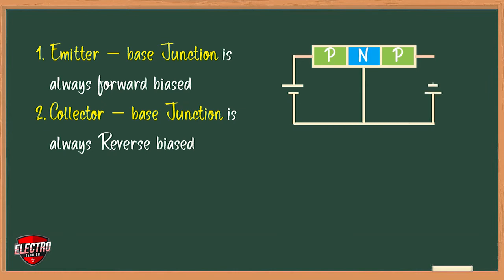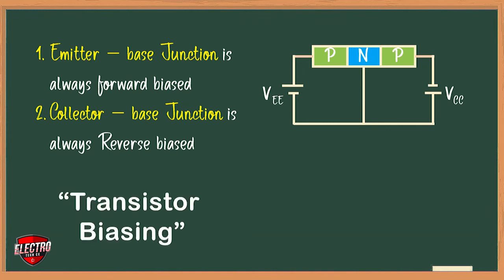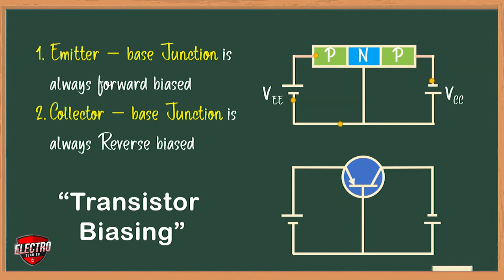Two batteries provide the DC emitter supply voltage VEE and collector supply voltage VCC for proper biasing of the two junctions. The positive terminal of VEE is connected to the P-type emitter to repel or push holes into the base. The negative terminal of VCC is connected to the collector to attract or pull holes through the base.